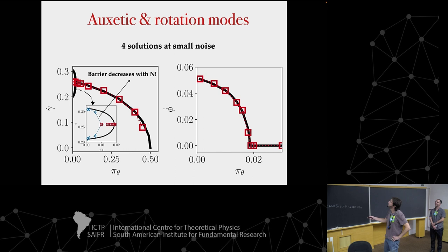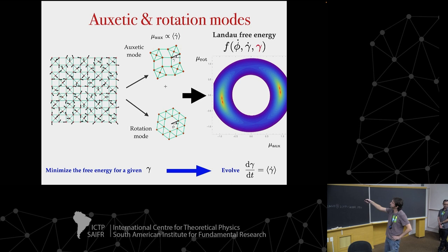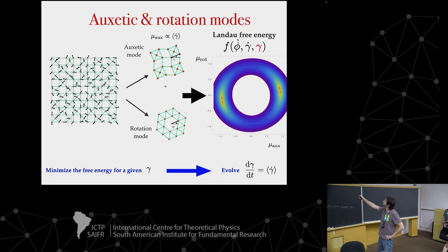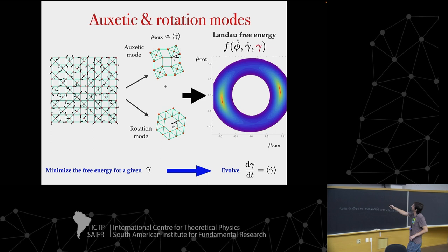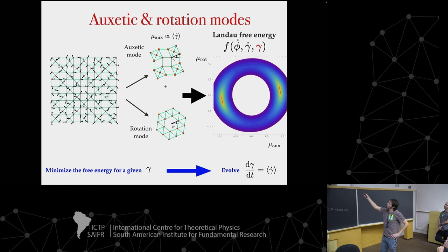Sure. This is a network with two floppy modes: the auxetic mode controlled by gamma (which goes from zero to two pi and controls whether the system is expanding or contracting), and the rotation mode — a rigid rotation. Gamma-dot is how fast the auxetic mode evolves, and phi-dot is how fast the rotation evolves. You start your simulation, calculate the Landau free energy for a given configuration, find the four minima, pick one — which immediately defines your order parameters gamma-dot and phi-dot — then evolve the system to a new configuration and repeat.